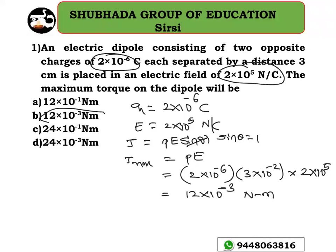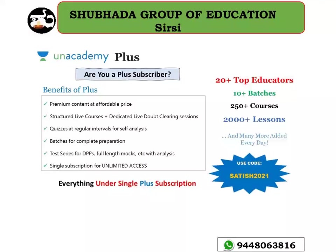The answer is 12 × 10⁻³ Newton meters, so option B is the right answer for this question.